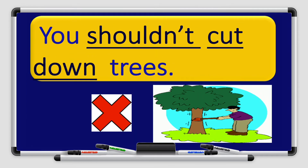Another example: 'You shouldn't cut down trees.' 'You' is the subject, 'should' is the modal verb used to give advice, 'not' is the negative form, 'cut down' is the verb in the infinitive form, and 'trees' is the rest of the sentence. To make the sentence negative: 'You shouldn't cut down trees' or 'You should not cut down trees.' Great job boys and girls!